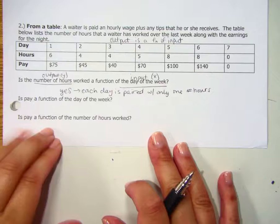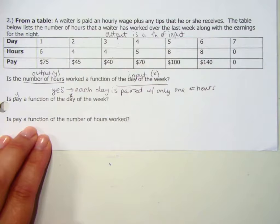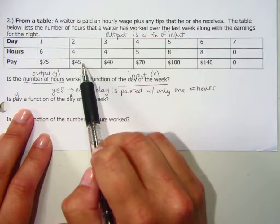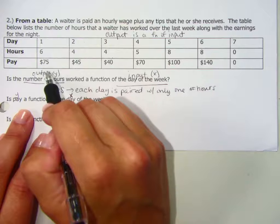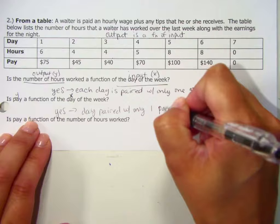Let's look at the next one. So now we have is pay a function of the day. Pay is our output or our y. Day, again, is our input or the x. So again, I'm looking, do I have a day that is paired with more than one pay? No. Each day, again, one is only paired with 75, two is only paired with 45 and so on. So this, again, is a function.